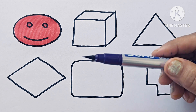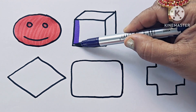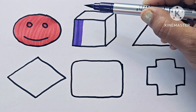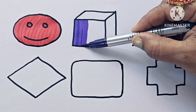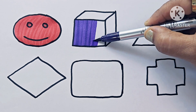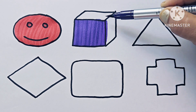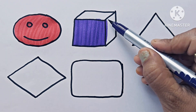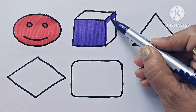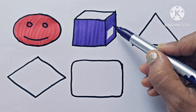Purple color. This is a cube, a 3D shape having six faces, twelve edges, and eight corners. It has length, breadth, and height.